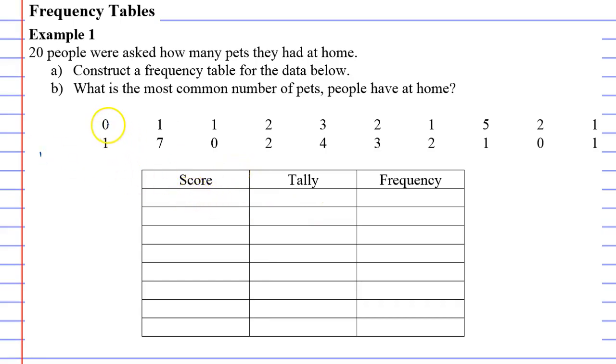In our score section we notice that zero is our smallest number and seven's our largest. So our scores should go in order from zero, one, two, three, four, five, six, seven all the way to seven. There is no six up here but we should still have it there. We shouldn't be skipping numbers.